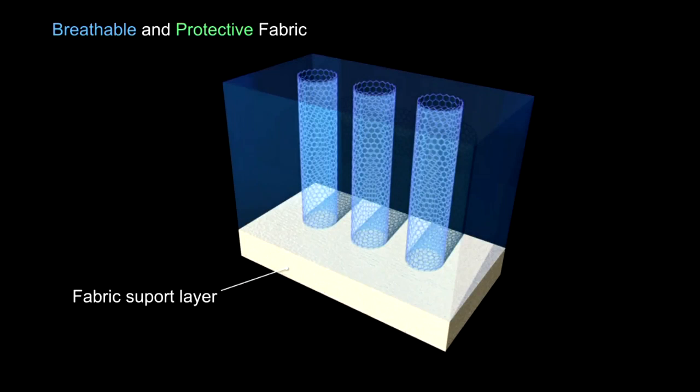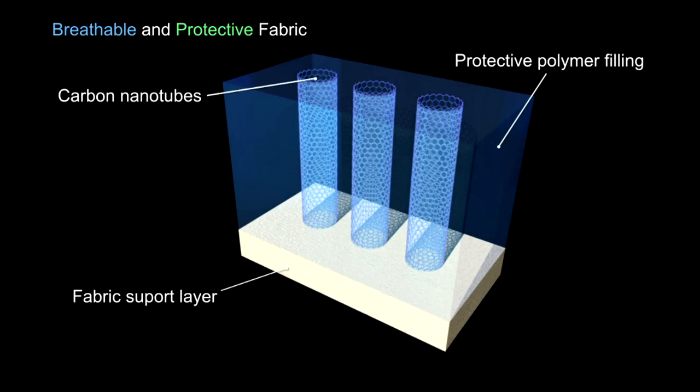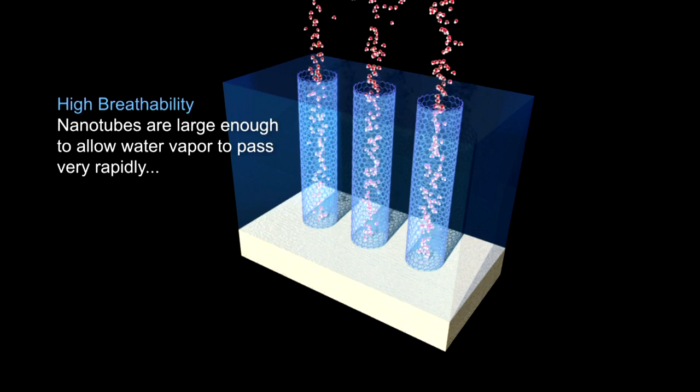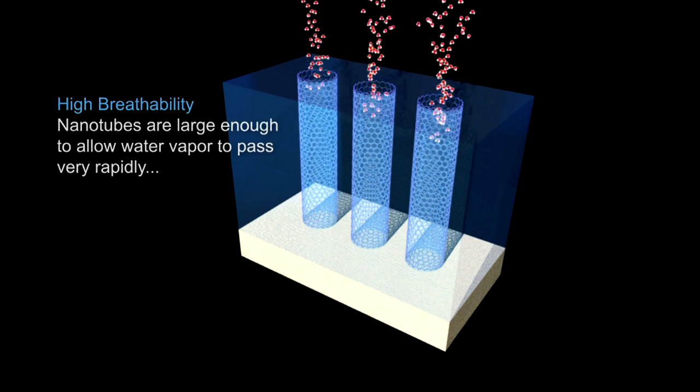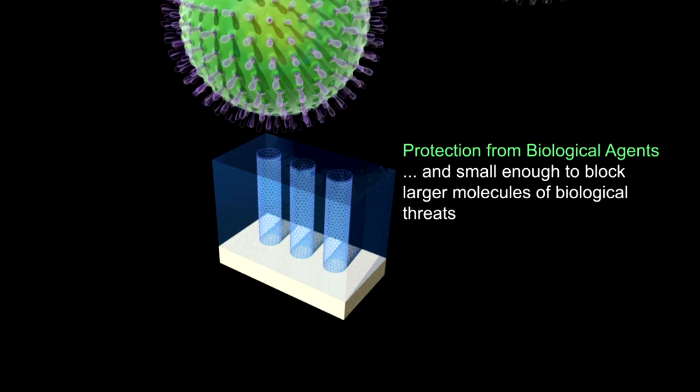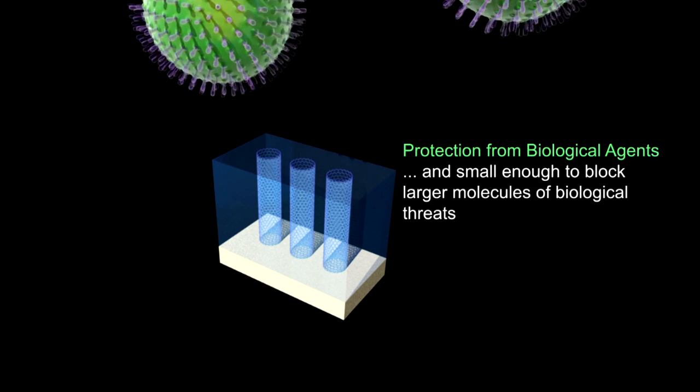This material essentially exploits the unique properties of nanomaterials like carbon nanotubes, which have small pore sizes, so small that they're able to block biological threats, and at the same time allow water vapor to go through at a very high speed.